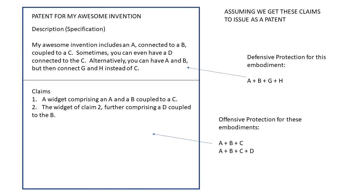Up in the written description we have another embodiment — A, B, G, H — which is only defensively protected. So if you wanted to also prevent people from doing A, B, G, and H, you would want to add that as a claim three to this hypothetical application. As to whether it is independent or dependent, that depends on how the claims are written. Since claim one has A, B, and C, and this third embodiment doesn't have C in it, we'd probably want to make a new independent claim to cover A, B, G, and H without C.